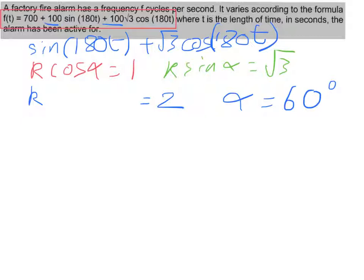So that means alpha is equal to 60 degrees. Now remember, if you've been asked to state this as a single function, you should do that. So we had k sine 180t plus alpha. So that would give me k, which is 2, sine 180t plus 60.